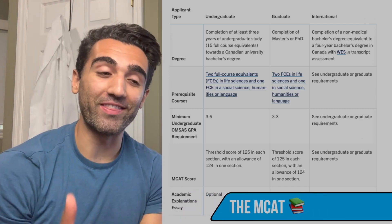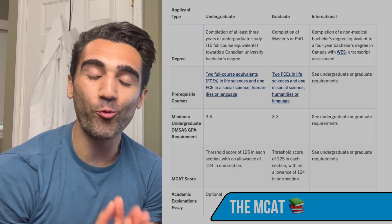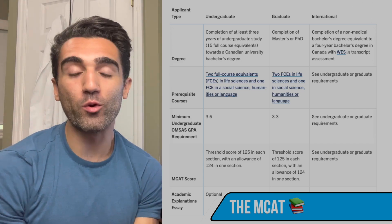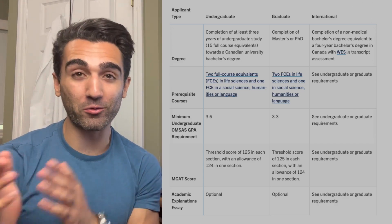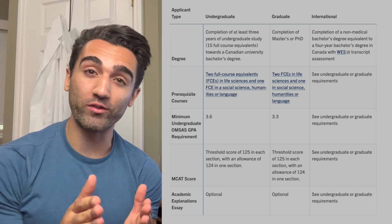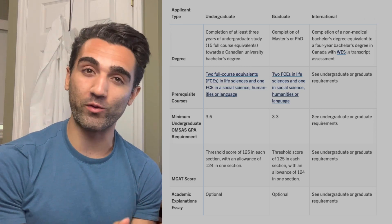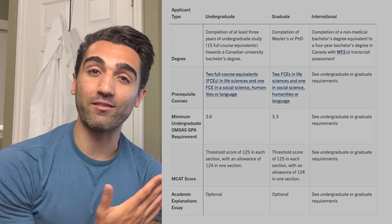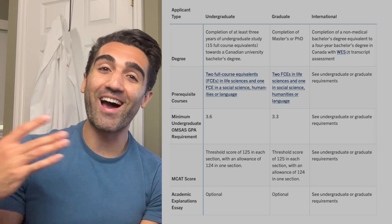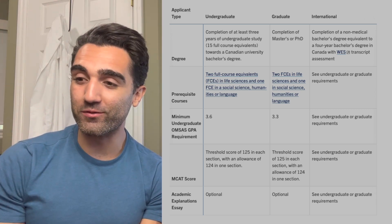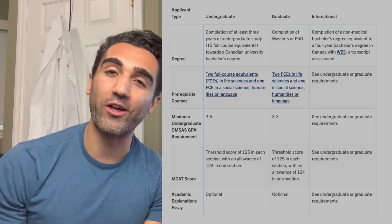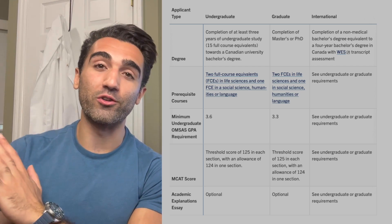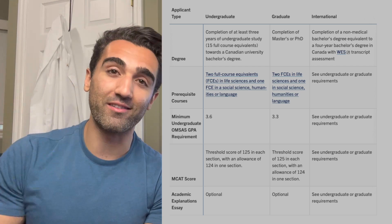Moving on to the MCAT: its usefulness for U of T is only as a threshold. As long as you meet the minimum scores — a 125 in every single section, with one section allowed to be 124 but no lower — the MCAT doesn't mean anything more for the rest of your application. Having a higher MCAT score doesn't help. When I applied with a really good MCAT score, it didn't help me at all. You just have to meet the threshold requirement, and once that's done, they move on to the rest of your screening.